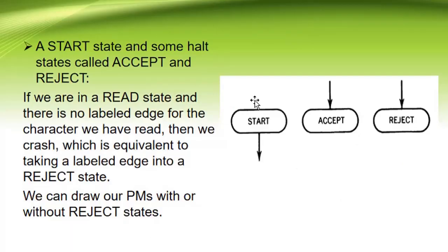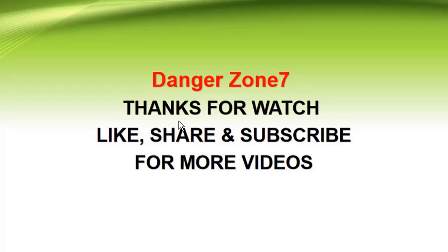Next is the start state — to start the Post Machine, we always use a start state. There are also accept and reject states, which are opposites. If a string successfully reaches the accept state during execution, the string is valid. If it reaches the reject state, the string is invalid. We can build a Post Machine without a reject state, or we can add multiple reject states — it is optional. This was the basic information about the Post Machine: what it is, what symbols are used, and how they work. In the next video, we will look at examples. Thanks for watching.